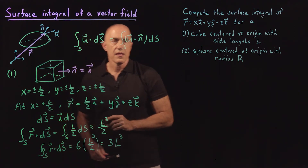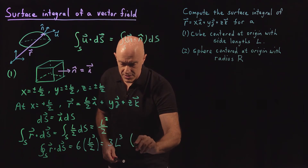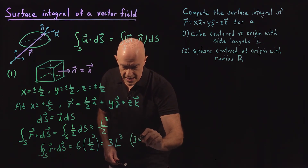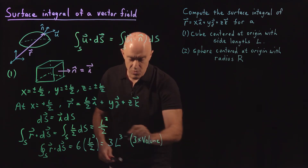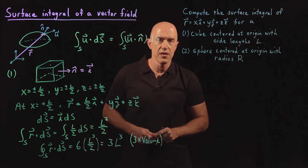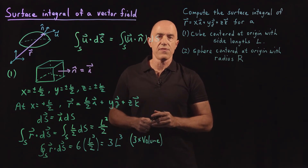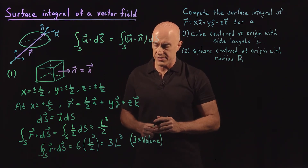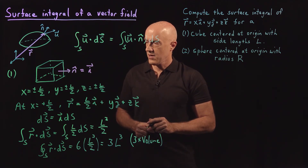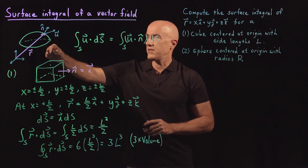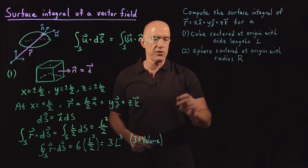The volume of the cube is L cubed, so this result is actually 3 times the volume of the cube. We'll prove that later when we have our fundamental theorems of vector calculus, particularly the divergence theorem. That's the surface integral of the position vector r over a cube.